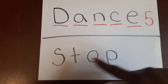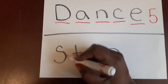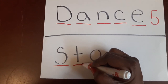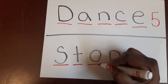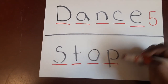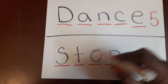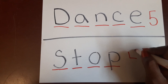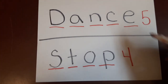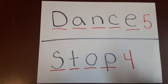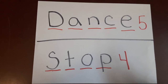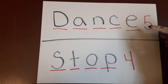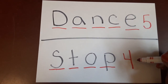Let's count the letters in the word 'stop.' One, two, three, four. How many letters are in the word 'stop'? There are four letters in the word 'stop.' Which word has more letters — dance or stop? Dance has more letters because five is bigger than four.